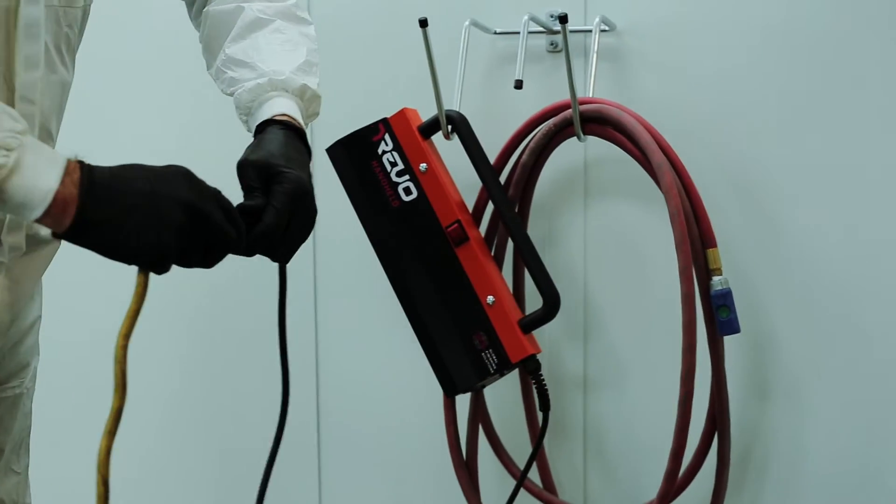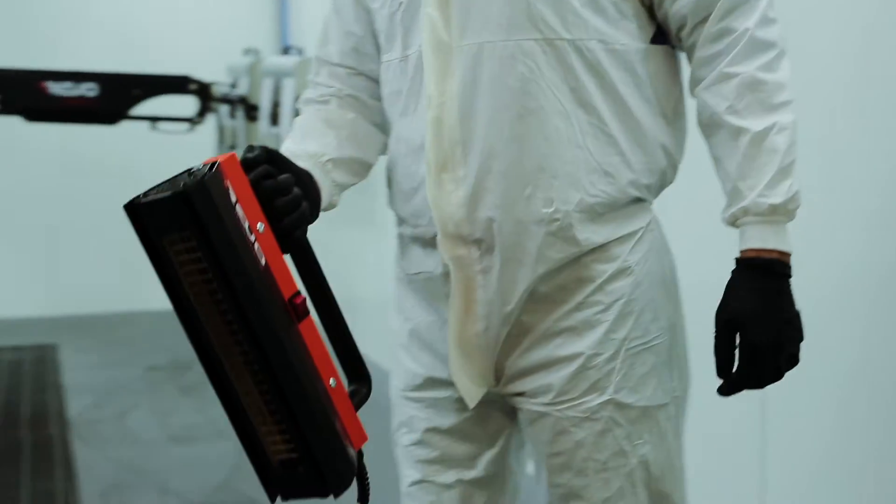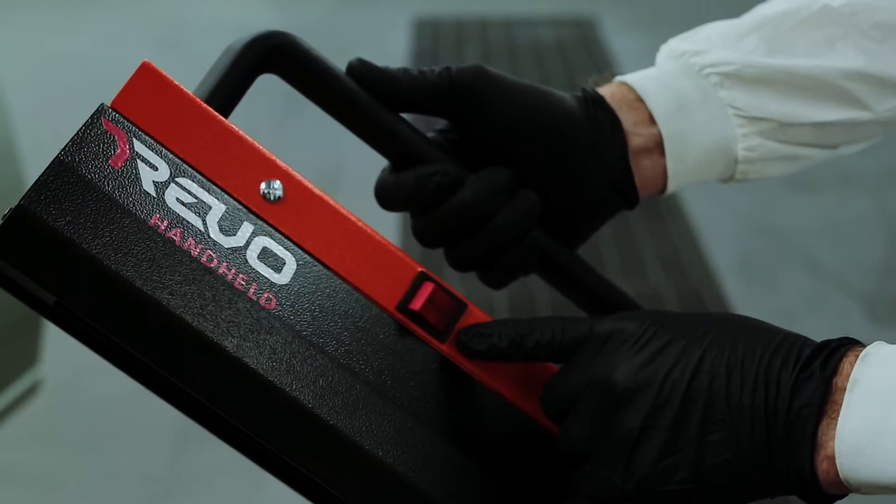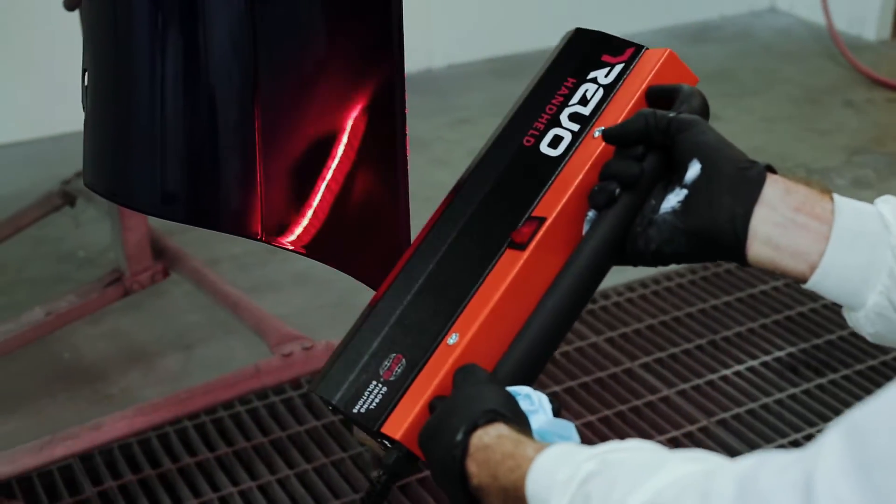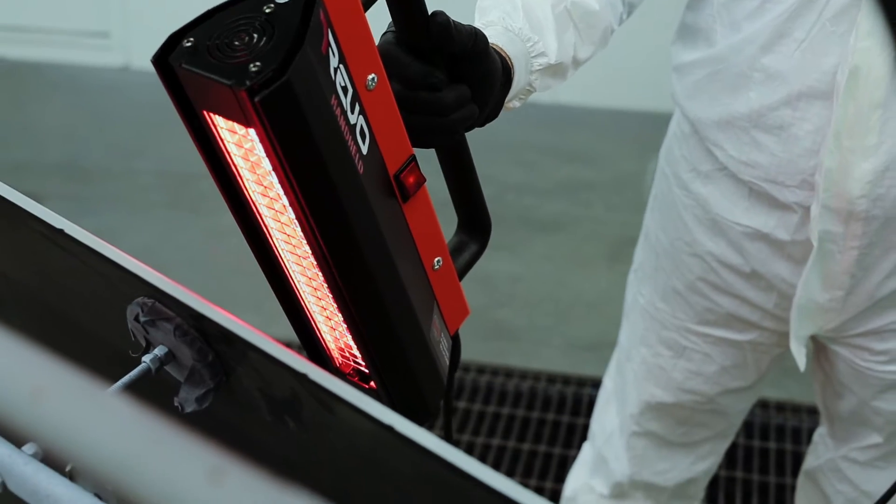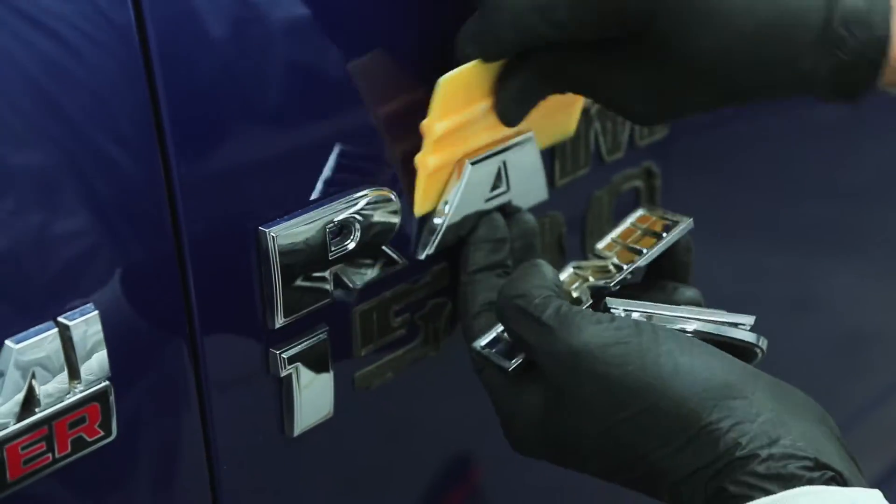Let's start with the Revo Handheld. Make sure to connect the power cable to a 110-volt outlet. The on-off button is located right here to the side. The Revo Handheld can cure most coatings completely in three minutes or less. It's great if you want to soften and remove adhesives, like this vehicle's emblem.